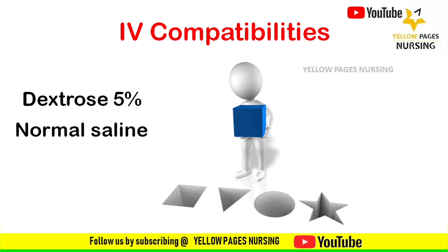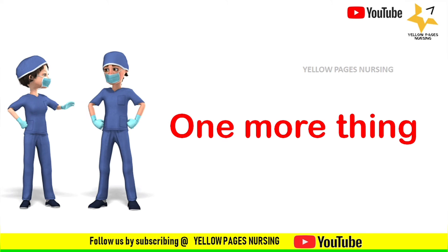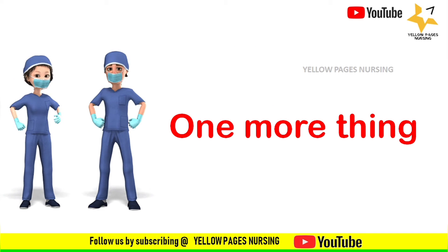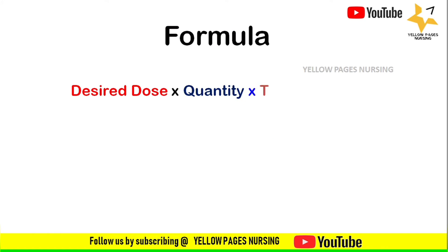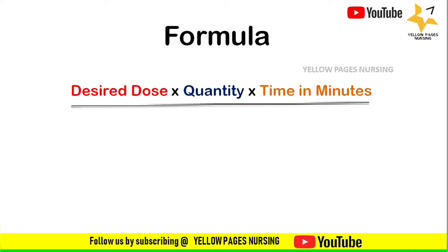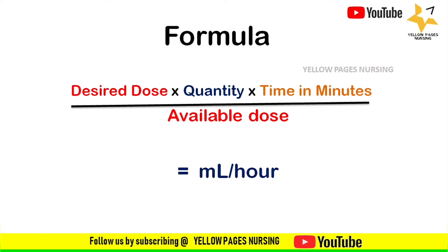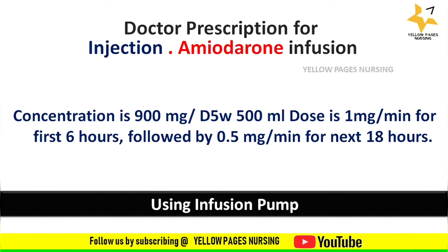A very important thing to keep in mind is ensuring a good IV access line before beginning the infusion. The formula is: desired dose multiplied by quantity multiplied by time in minutes, divided by available dose, which gives ml per hour. The prescription is amiodarone 900 mg in D5W 500 ml, 1 mg per minute for the first 6 hours, followed by 0.5 mg per minute for the next 18 hours.